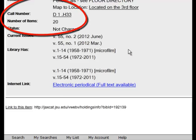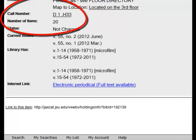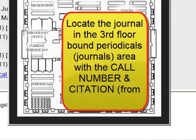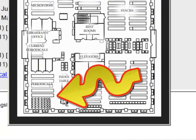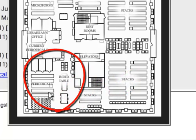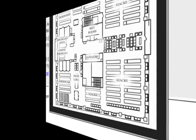Write down your call number, which is D1.H33. This is a map of the third floor — these are bound periodicals. You will take your call number to the bound periodicals section, find the call number, and then volume 22. You can take your print volume to the second floor or to the lobby and photocopy it.